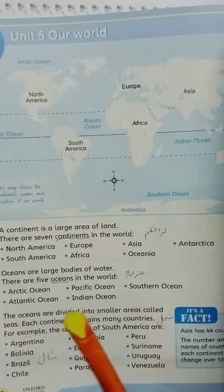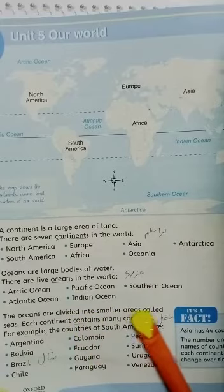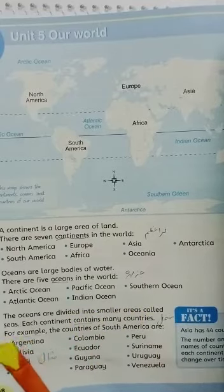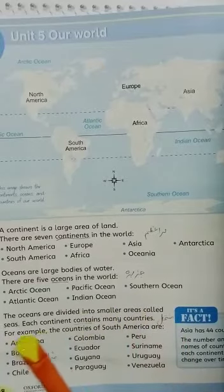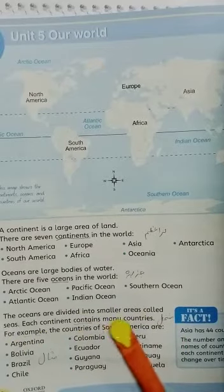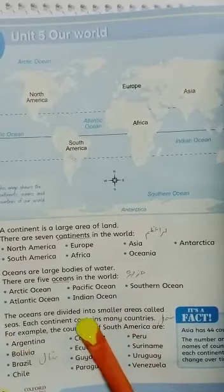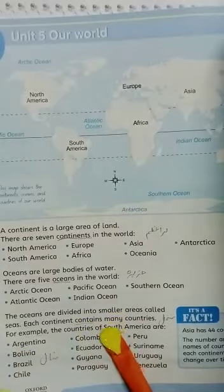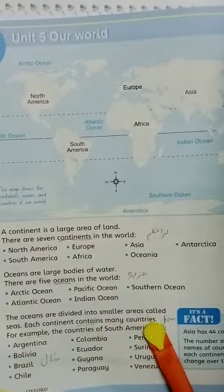The oceans are divided into smaller areas called seas. Each continent contains many countries — a continent is made up of many smaller countries.